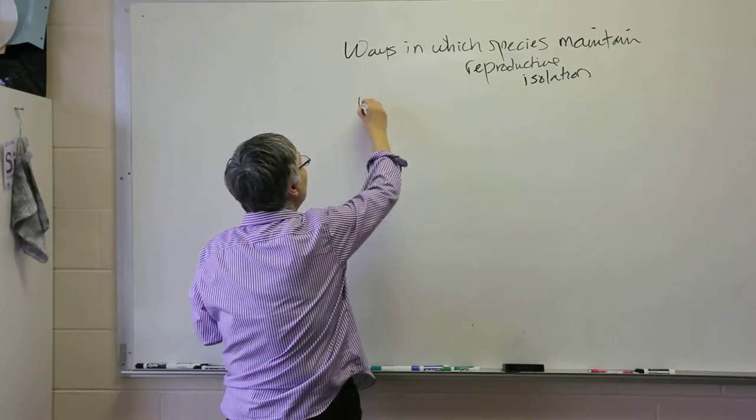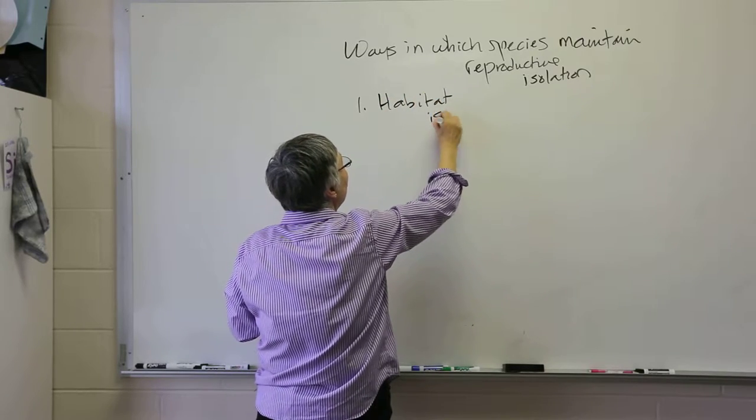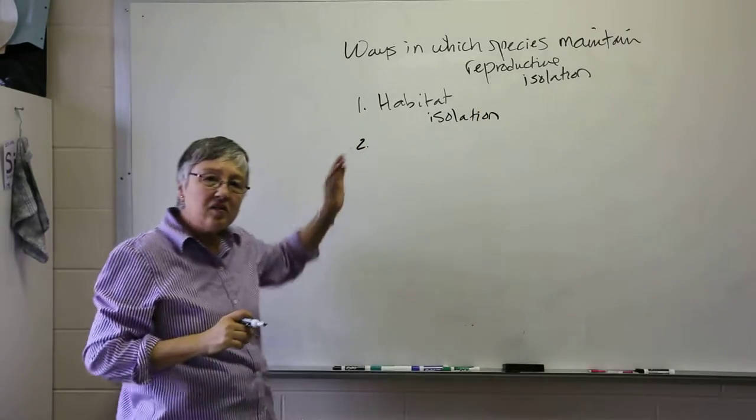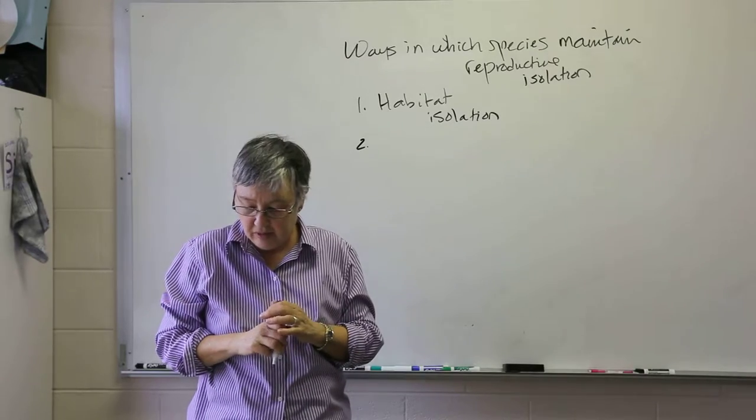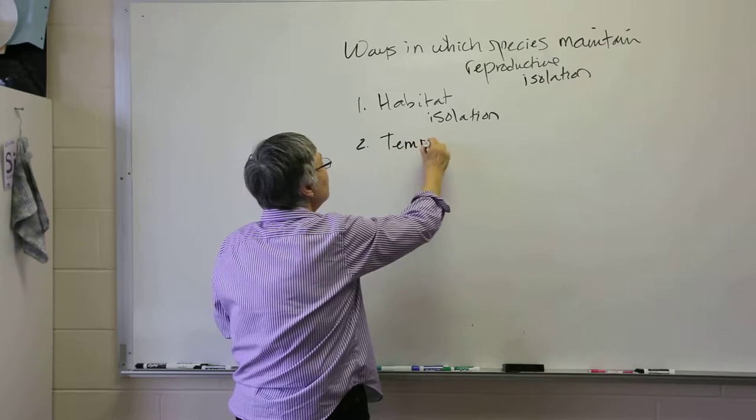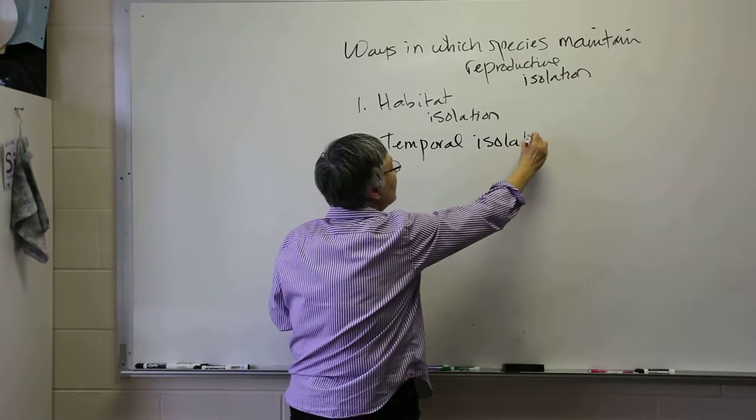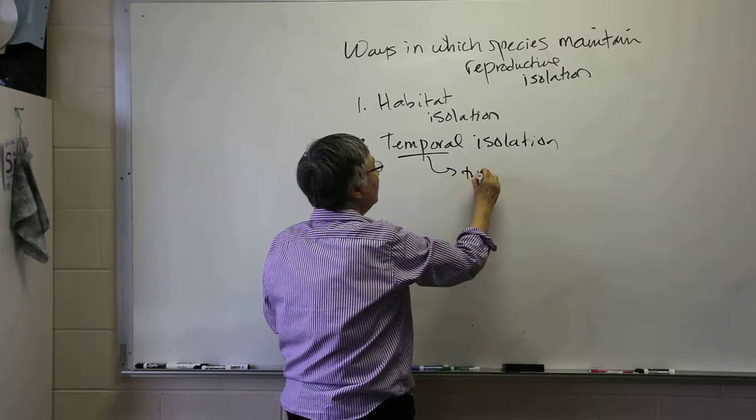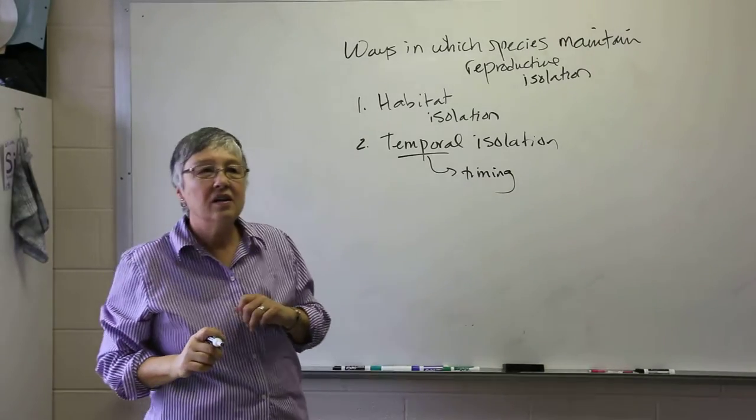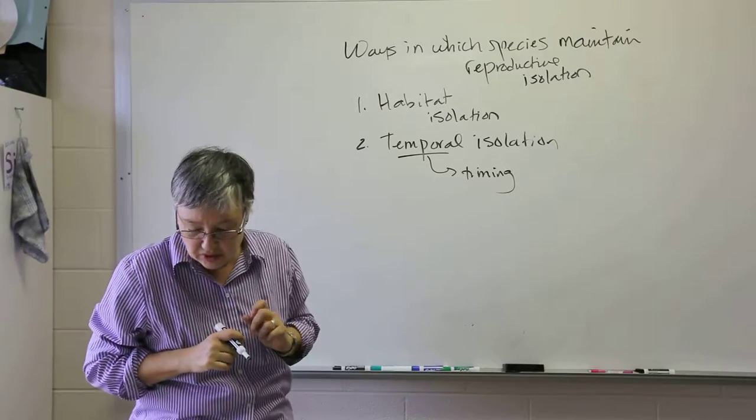Number one is what we call habitat isolation. I'll come back and give examples of each of these categories in just a bit. The second mechanism is called temporal isolation, temporal referring to time or timing, and in this case the timing of breeding or reproduction might be different between species.